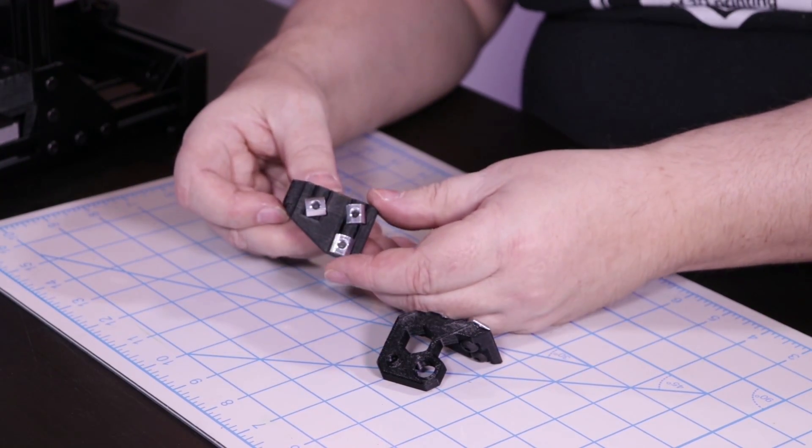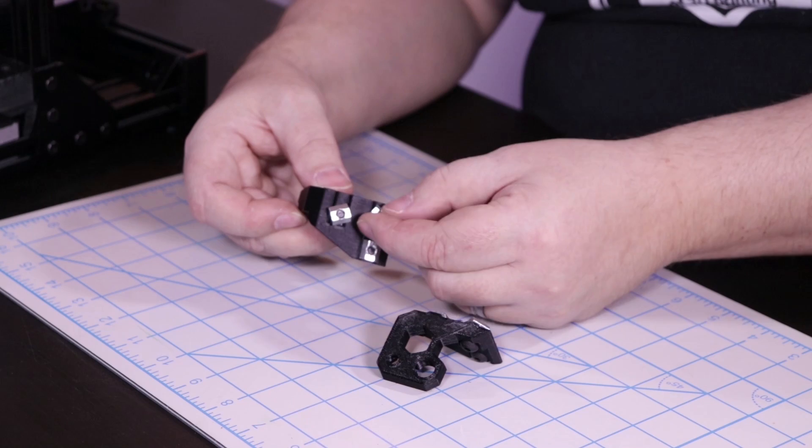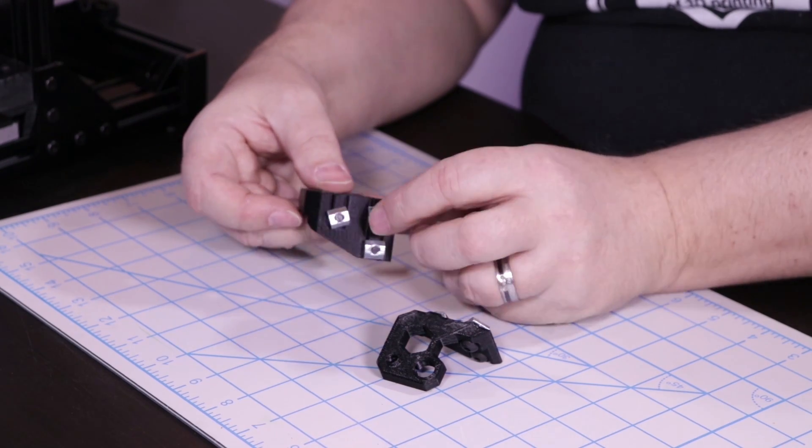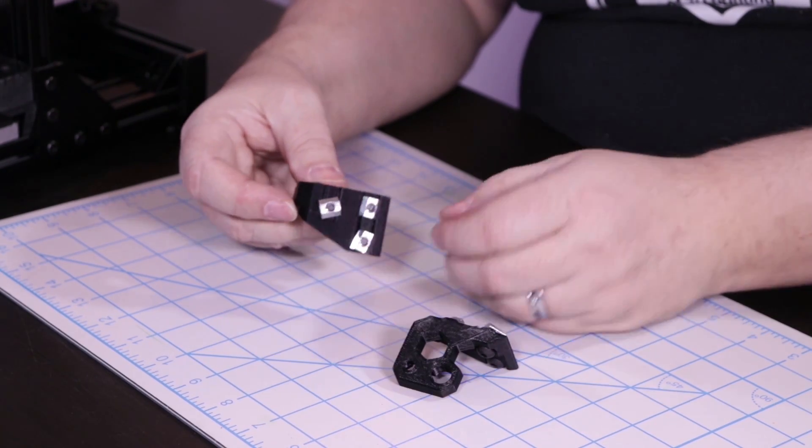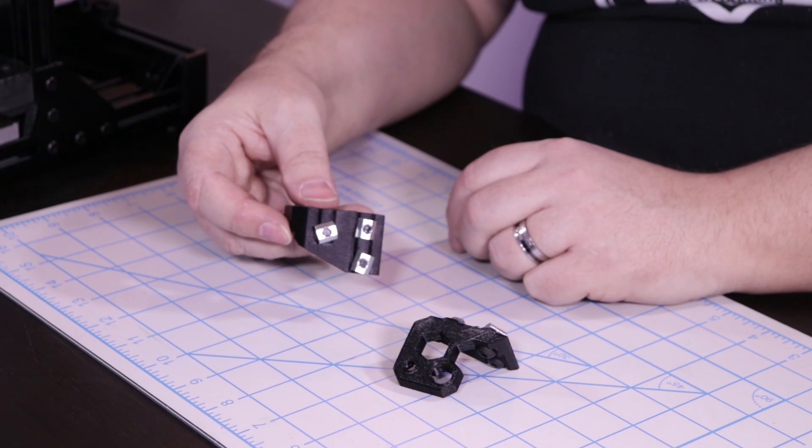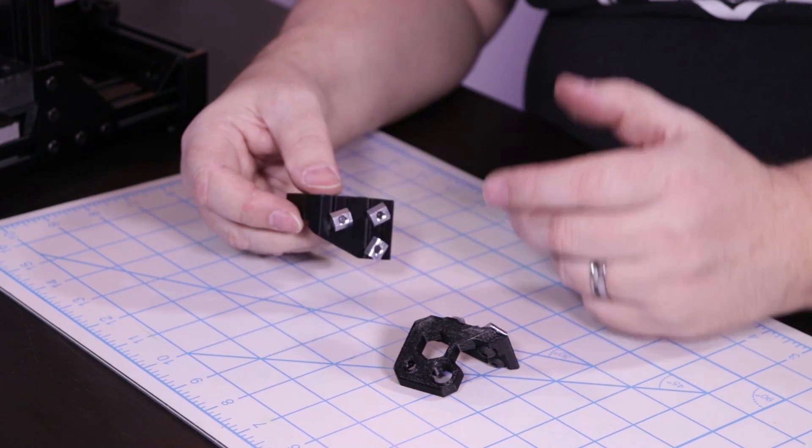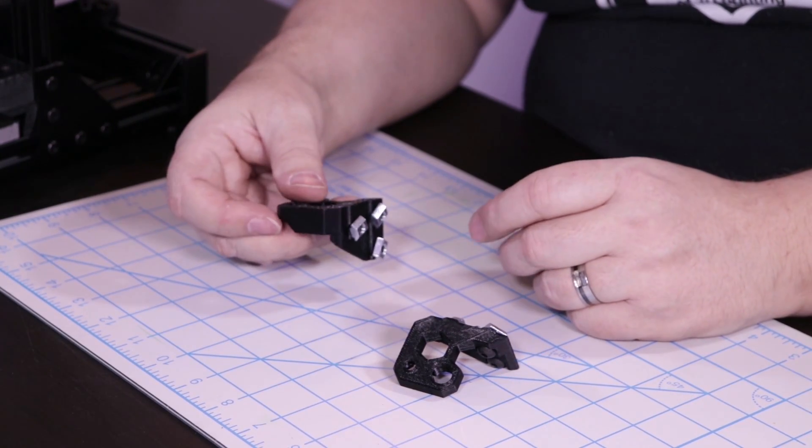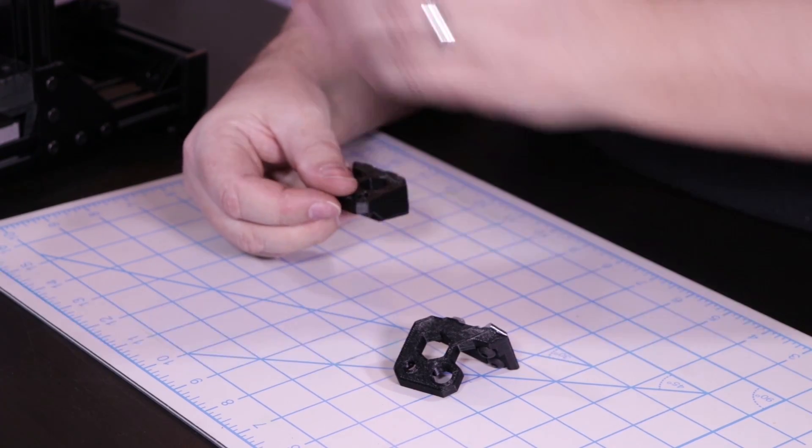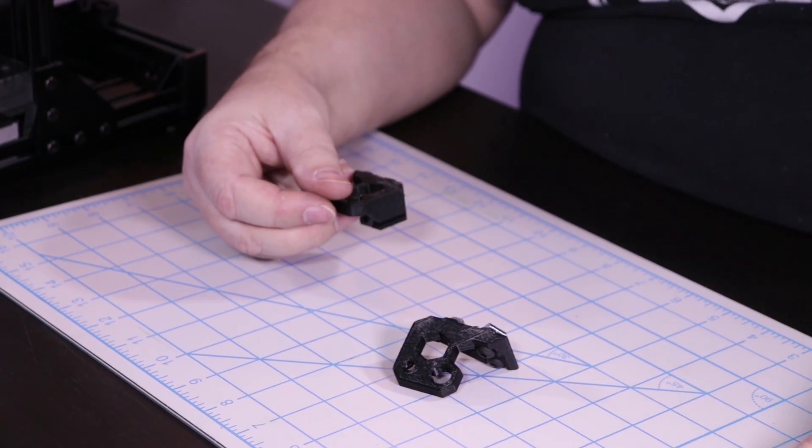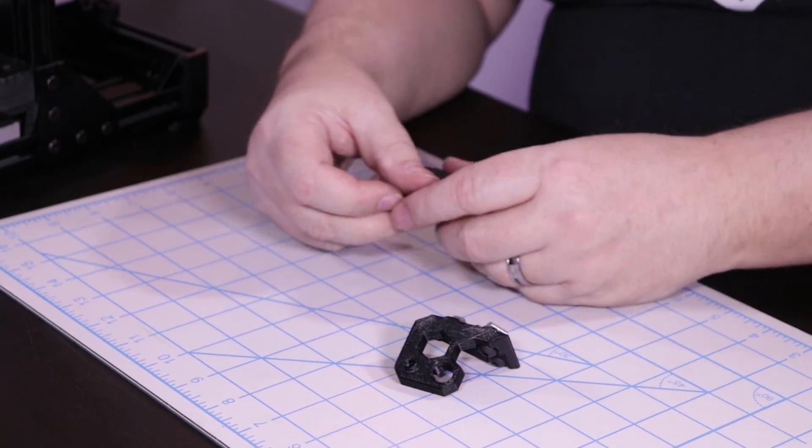And on the back, we are using M5 sliding T-nuts. That's what those are. Those are sliding T-nuts. And we've already installed them. All we have to do is go ahead, slide them in, and tighten them up. First and foremost, though, we have to put on our X-axis.